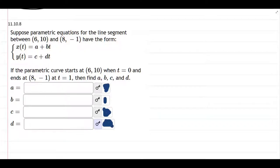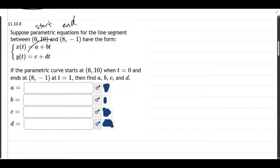In this question, we want to have parametric equations between two points. The point (6, 10) is the start, and (8, -1) is the end. We want it to have this form here.